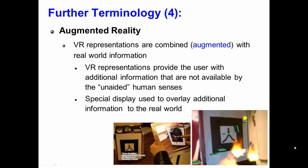In augmented reality, virtual reality representations are combined or augmented with real world information — it's essentially the merging of the virtual world and the real world. Virtual reality representations provide the user with additional information not available by the unaided human senses, which implies having a special display to overlay that additional information. Augmented reality has many applications, many of which focus on repairing the internal components of a living or a mechanical system, and it's widely used for health education and training. For example, you can provide information about where cancerous tissue is located within a patient, or provide information to a surgeon on where to make an incision by overlaying it on the patient's body.